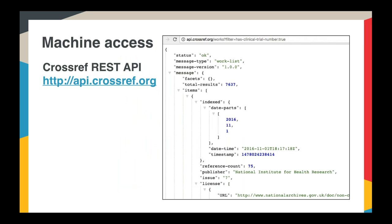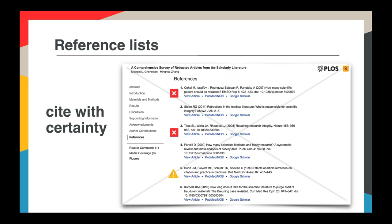All of the Crossmark metadata, like all Crossref metadata, is available in machine-readable format through our REST API. Anyone anywhere can access our API with no registration or login required. It's an incredibly powerful tool — here I've queried all works that have a clinical trial number and it returns that information in machine-readable format. One example of what's possible: publishers could use the API to look up DOIs of articles in their references and pull back any updates to flag them alongside those references.